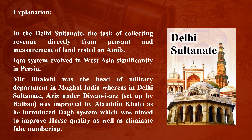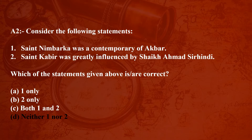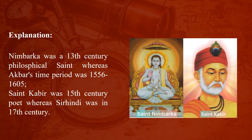Question number two: Consider the following statements. Statement one: Saint Nimbarka was a contemporary of Akbar. Statement two: Saint Kabir was greatly influenced by Sheikh Ahmed Sirhindi. Which of the statements is/are correct? Option A: one only; Option B: two only; Option C: both one and two; Option D: neither one nor two. The answer is Option D — neither one nor two. Nimbarka was a 13th century philosophical saint, whereas Akbar's time period was 1556 to 1605. Saint Kabir was a 15th century poet, whereas Sheikh Ahmed Sirhindi was in the 17th century.